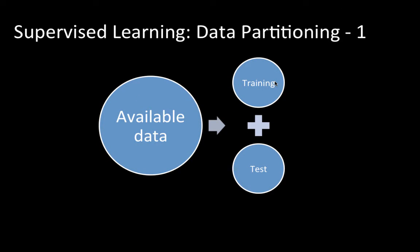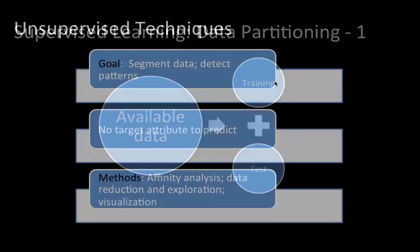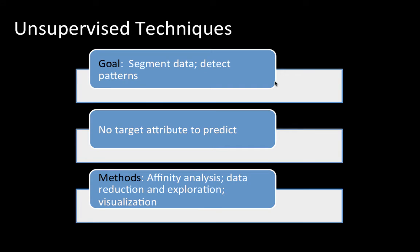So in supervised learning, we use data partitioning. That's how to evaluate the model. So supervised learning is about having historical data on predictor attributes as well as the target attribute and using that to make predictions. Usually supervised learning also involves data partitioning, but not always. And we understand what data partitioning is, dividing the data into a training and a test partition. So we are talking about supervised techniques.